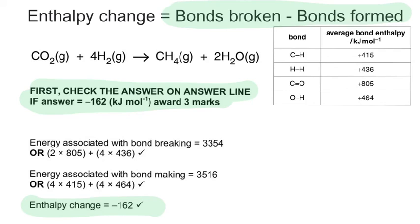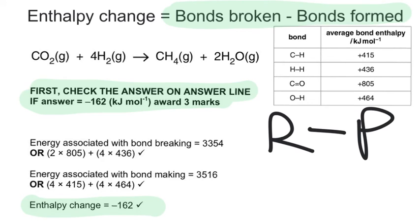But if you always do bonds broken minus bonds formed, or if you don't like bonds broken and bonds formed, you could always just learn to do reactants minus products. That's perfectly acceptable as well. But it's entirely up to you. You'll notice here that you can see in the mark scheme, they actually do use bond breaking, bond making. It doesn't really matter too much. It's all the same kinds of term.